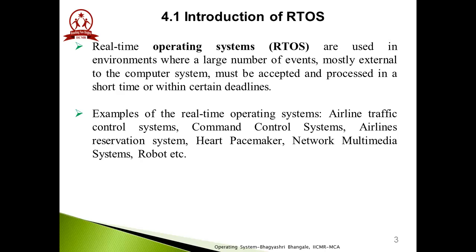Now we see why we use this RTOS system. When any event is driven with no wastage — suppose any event is allocated some time constraint, and if that event does not occur in that particular time, RTOS does not waste time for that particular event. That's why it is mostly used. It also offers modular task-based development and provides API functions to allow cleaner and smaller application code. It uses priority for analytical processing.